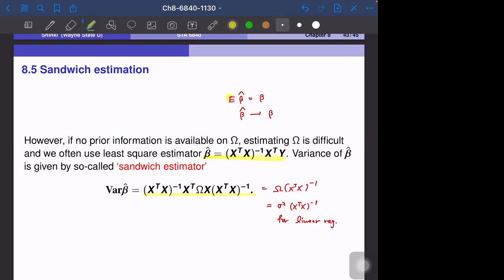Under the assumption that epsilon follows variance matrix omega, variance of beta hat based on this formula becomes this. This is pretty straightforward; we can derive this in the same way as the variance formula for the linear model. Since x transposed omega x is sandwiched by these two x transposed x inverse, this is called the sandwich estimator.